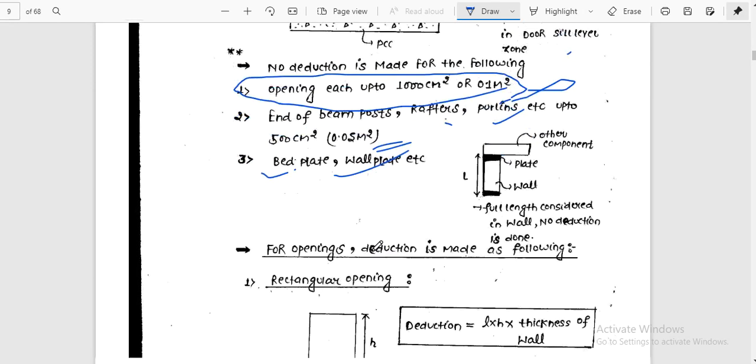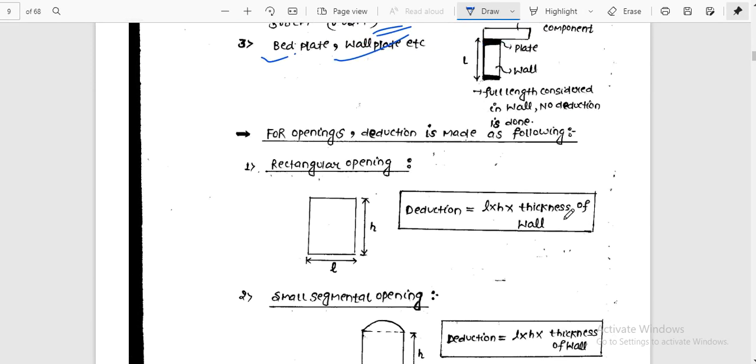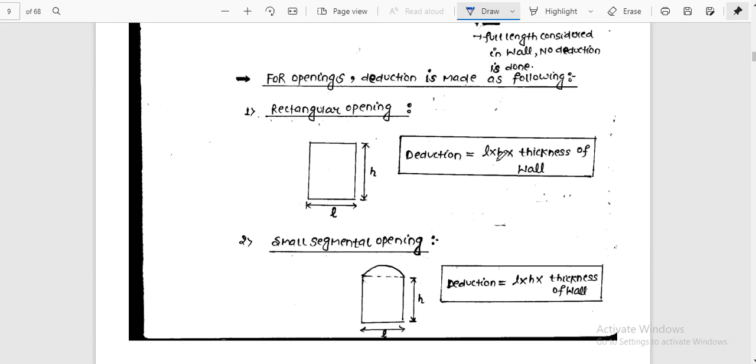For openings, deduction is made as following. Suppose I have a rectangular opening like a door - the deduction would be length multiplied by height into thickness of the wall.